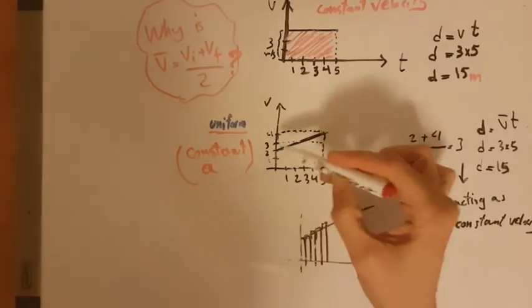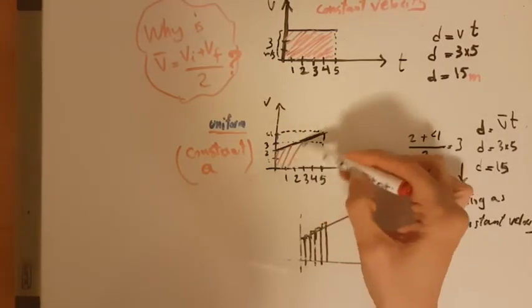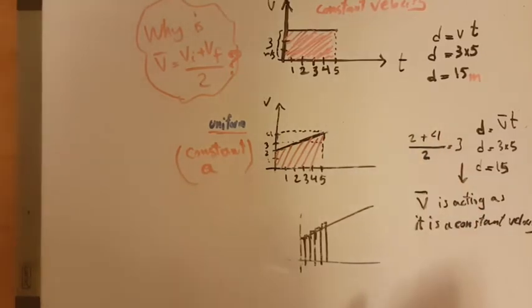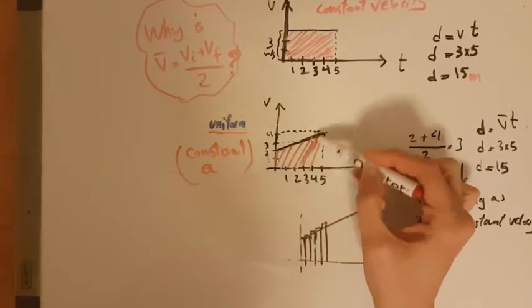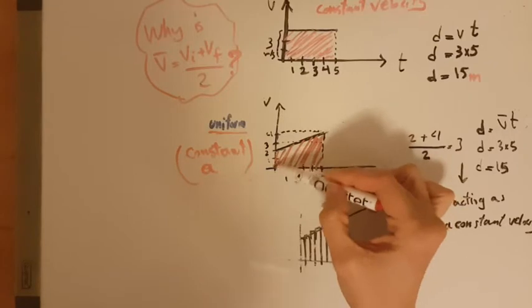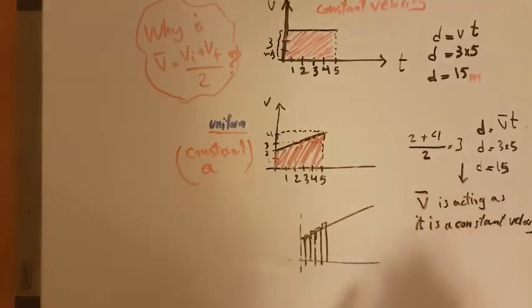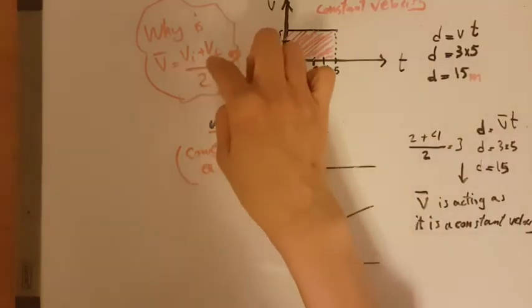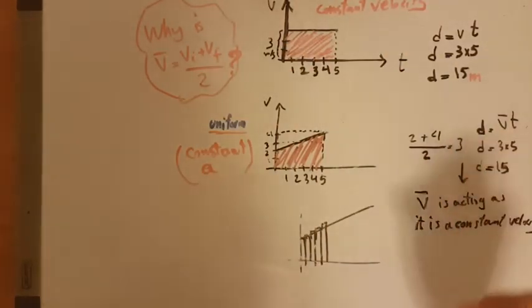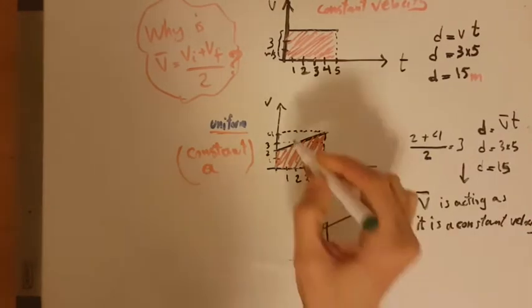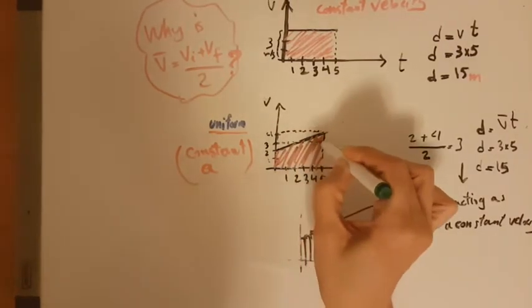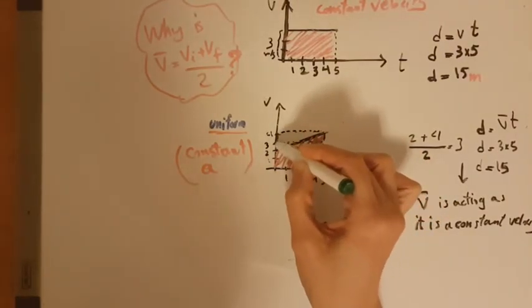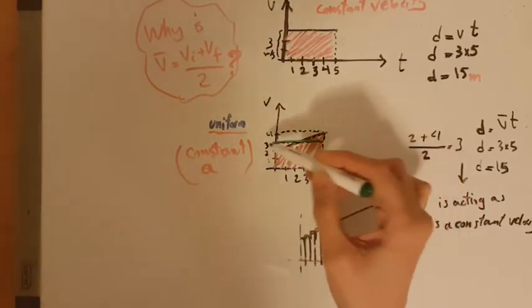And you can say that 2 plus 4 divided by 2 would be 3. And actually, the area underneath this would be equal to the area underneath... If you consider this, this is just following this formula. This will give you the average velocity, right?